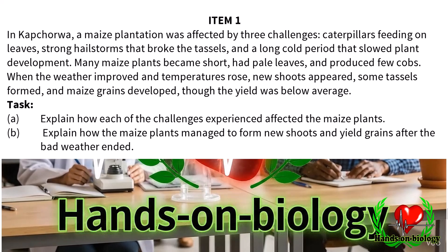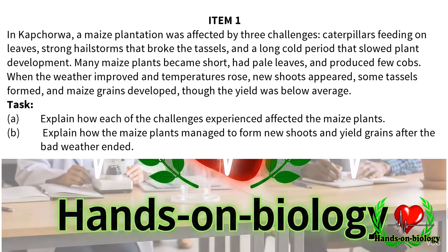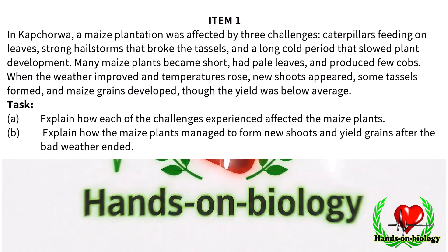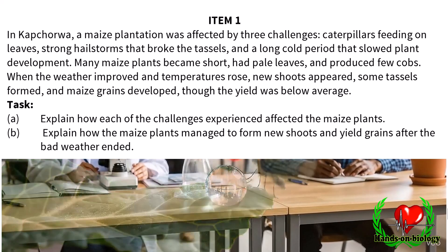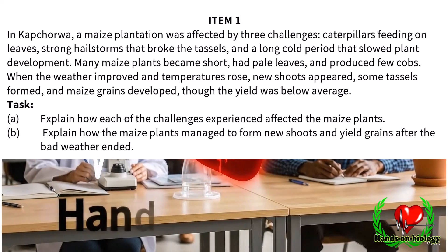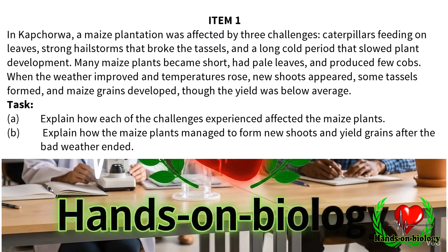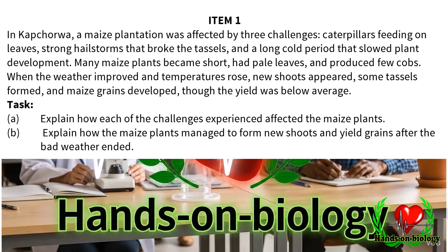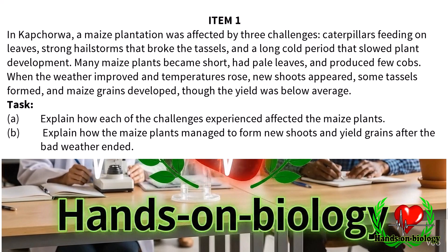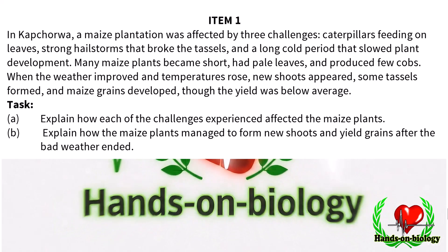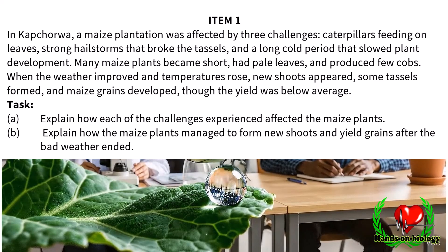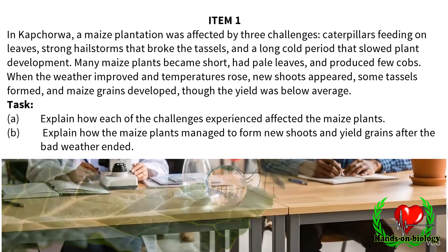Task A: Explain how each of the challenges experienced affected the maize plants. Task B: Explain how the maize plants managed to form new shoots and yield grains after the bad weather ended.